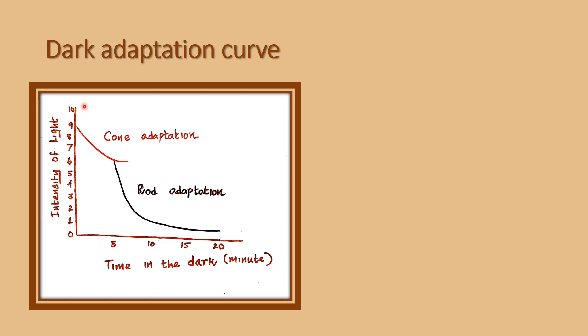The dark adaptation curve is the relationship between the threshold of the light stimulus—the log-threshold of the intensity of the light—and time spent in the dark room.